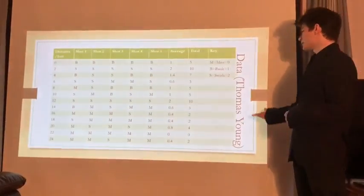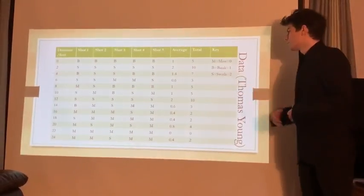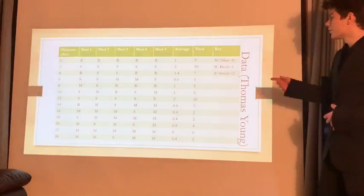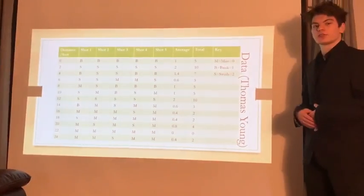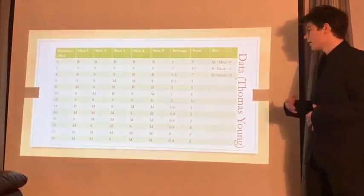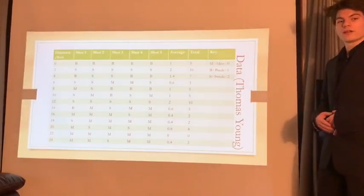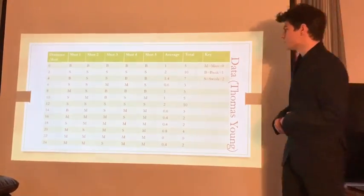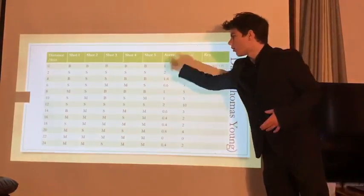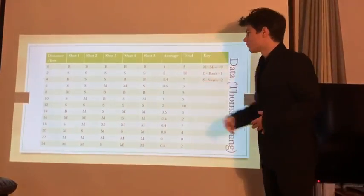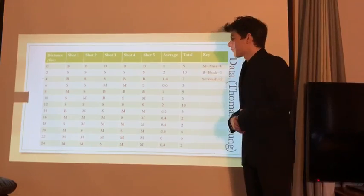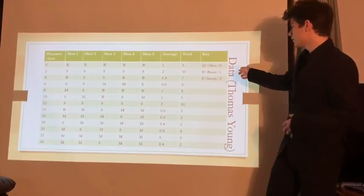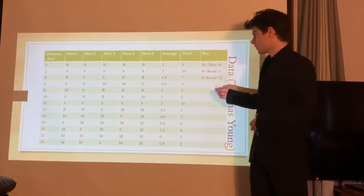This is my table. M equals miss, which equals zero. B equals bank, which equals one. S equals swish, which equals two. That will be the quality of each shot. As you can see, I got all banks for zero feet, which comes out to an average of one, because B equals one, which is a bank.